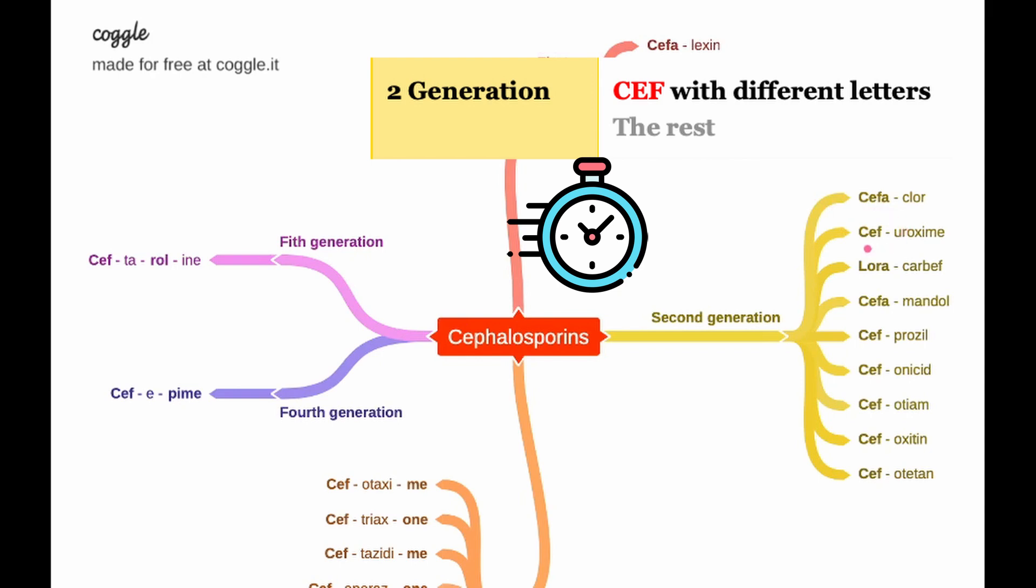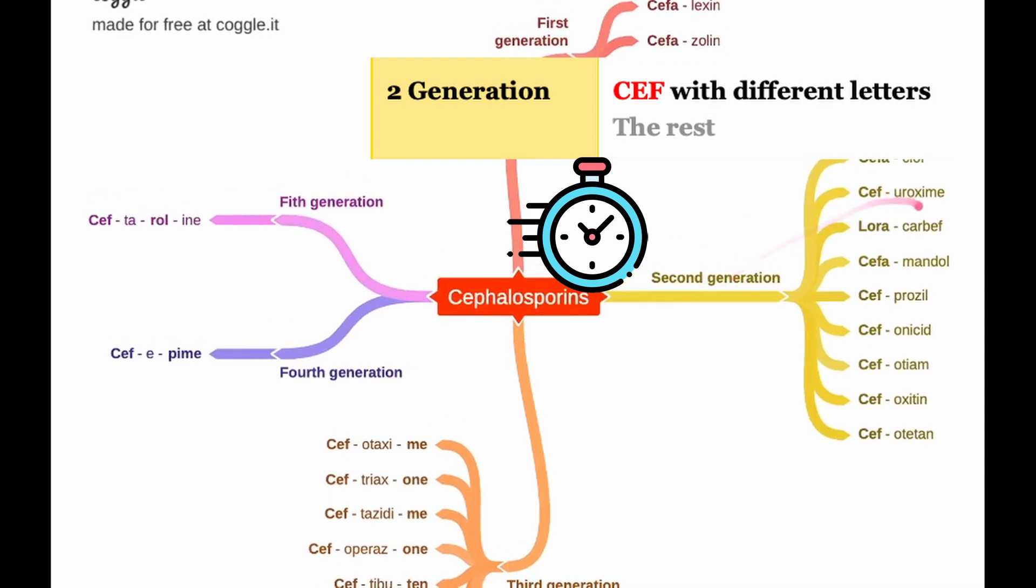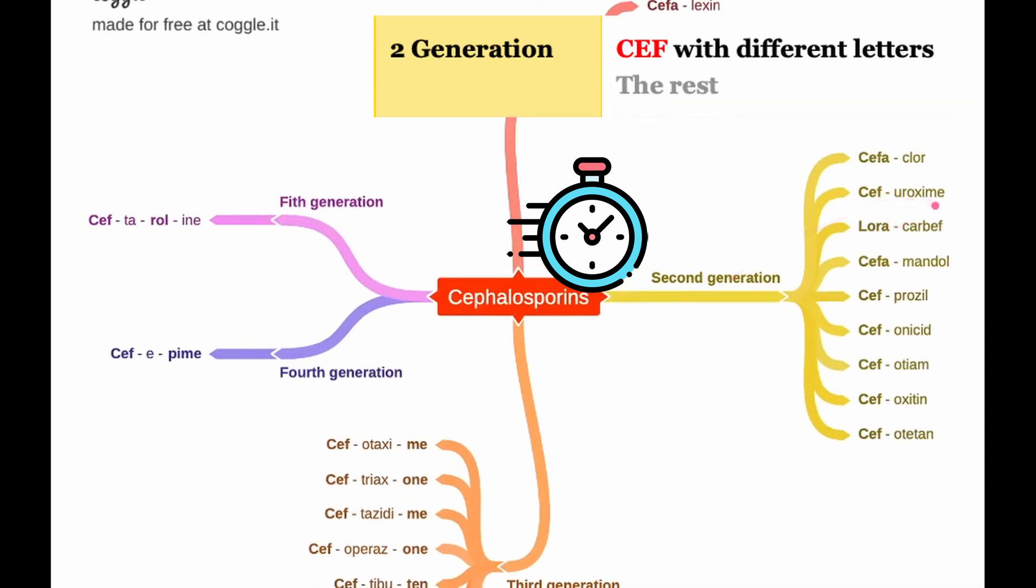Cefuroxime, it starts with 'cef' another letter here but it ends with '-me' so it's not third generation, don't confuse it with third generation, it's second generation. Cefuroxime sounds like furious, furious. Loracarbef, Lora is another exception, it sounds like a name, Laura.